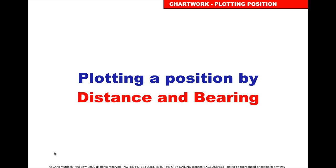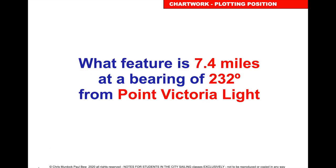We can also plot our position by distance and bearing. If we are given a distance and a bearing, we can work out our position. The question is: what feature is 7.4 miles at a bearing of 232 degrees from Point Victoria Light?